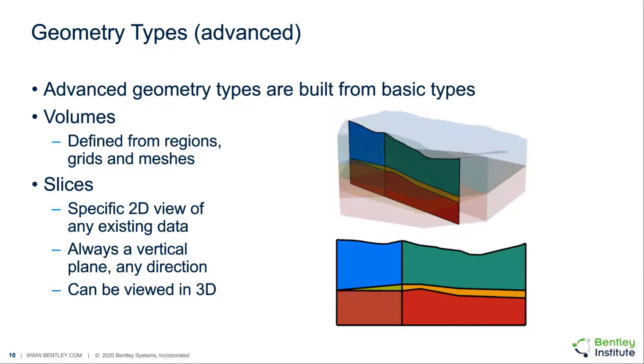There are also advanced geometry types which may be specified in Plexus Designer. These include volumes, which may be defined from combinations of regions, grids, and perhaps meshes. Slices along a specific 2D plane can also be defined as cutting through existing surface and region combinations. Slices are always vertical and can be in any direction. They can also be viewed in 3D view.